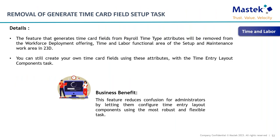Another removed feature relates to time attributes. Previously, after creating time entry layout components, admins had to manually run a separate program to apply the changes. Oracle has now removed that extra step — as part of its upgrade process, Oracle will automatically run whatever program is needed. Admins just create the time entry layout components and the system handles the rest automatically, saving an extra manual task.